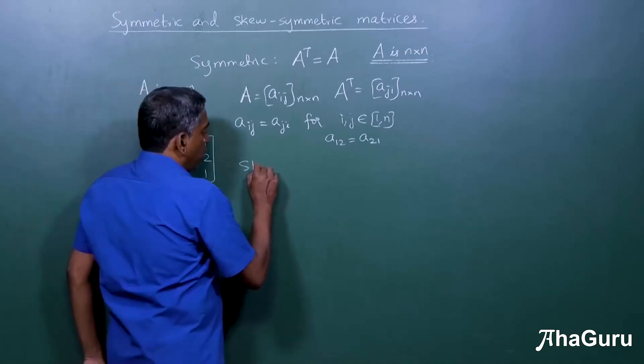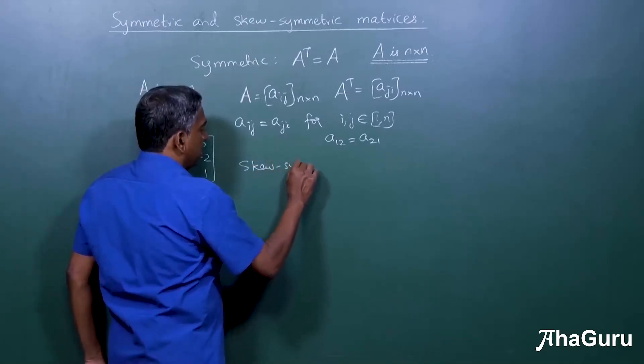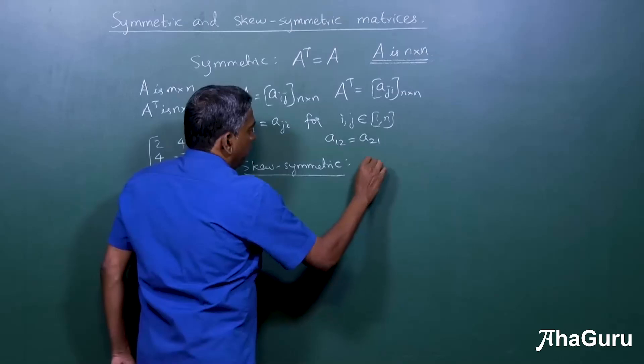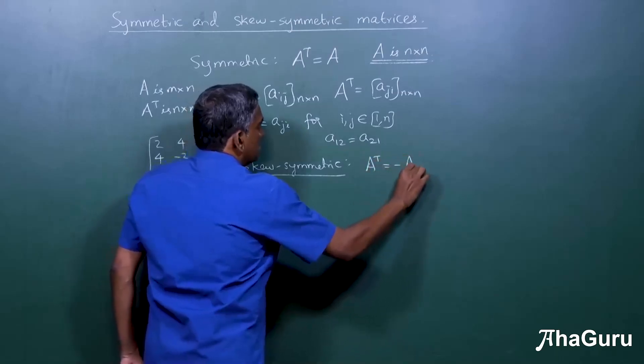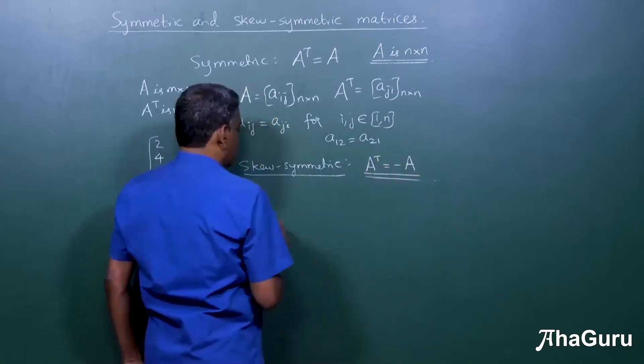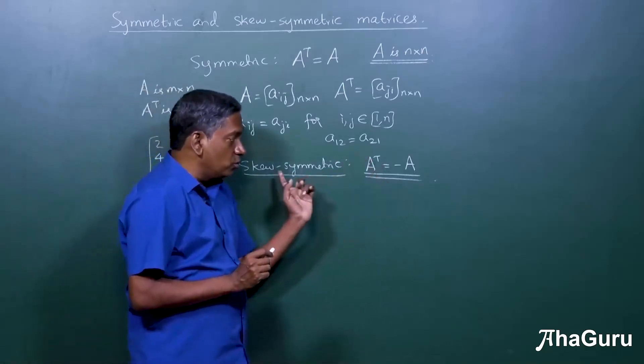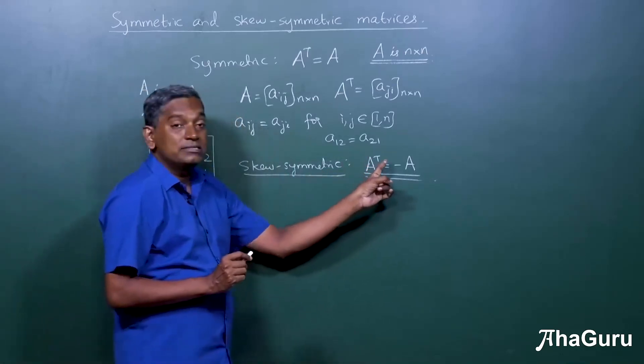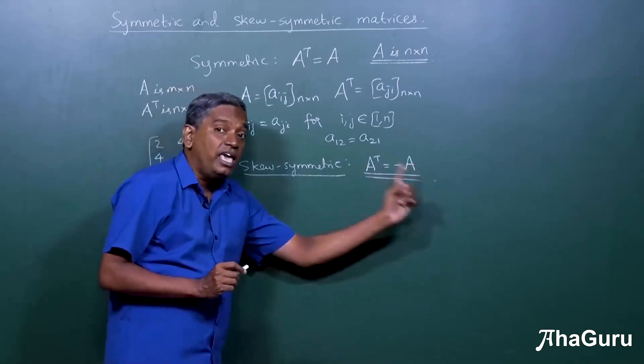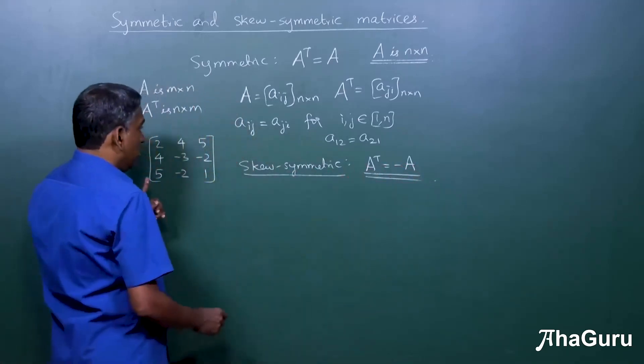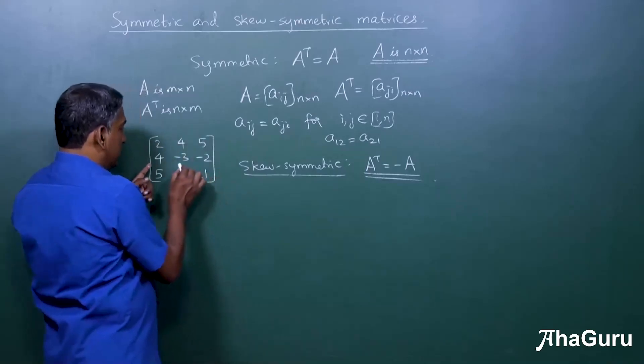Next, what is a skew-symmetric matrix? If A transpose is minus A, again it's a square matrix. A square matrix A of n by n order is skew-symmetric if A transpose is negative A. Now here what happens is, I can take the same kind of example.